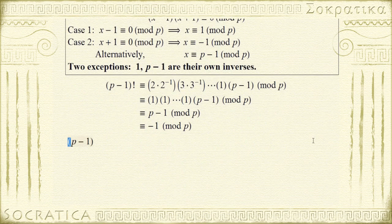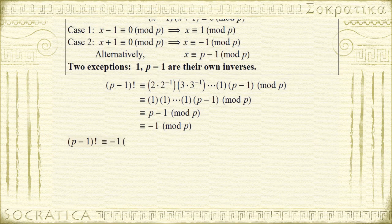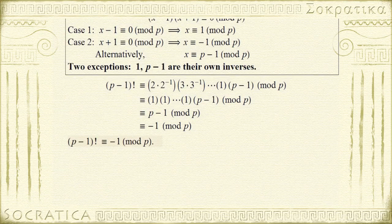And this proves that p minus 1 factorial is congruent to negative 1 mod p. And this is Wilson's Theorem.